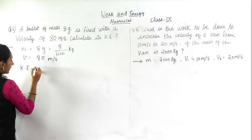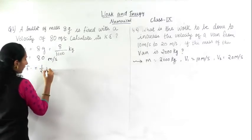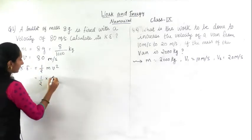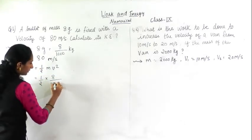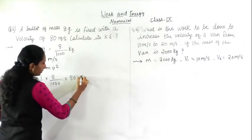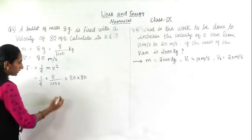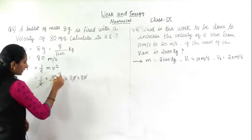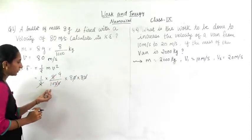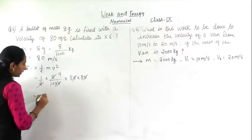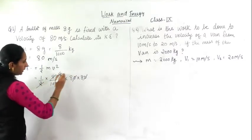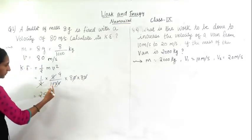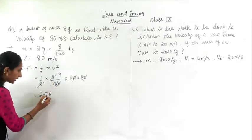Therefore, the formula for kinetic energy: K equals half m v square. Half into mass — it will be 8 divided by 1000 — into v square, that is 80 into 80. Now, the 10s can get cancelled, so you get half simplifying. Then 8 into 8 into 4 gives you 256, and you shift the decimal point.